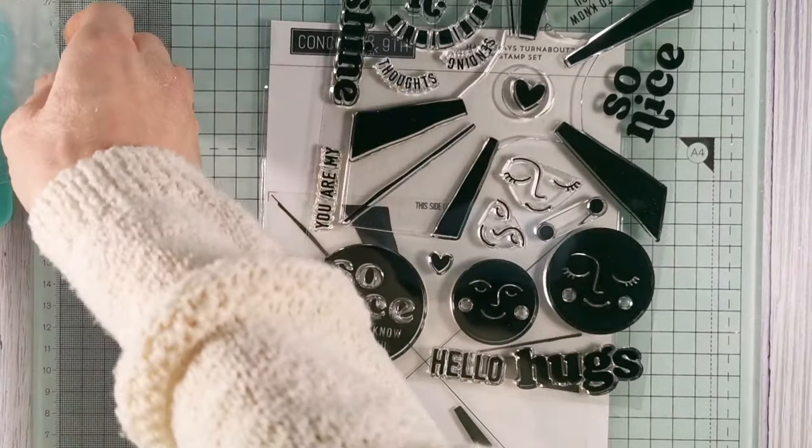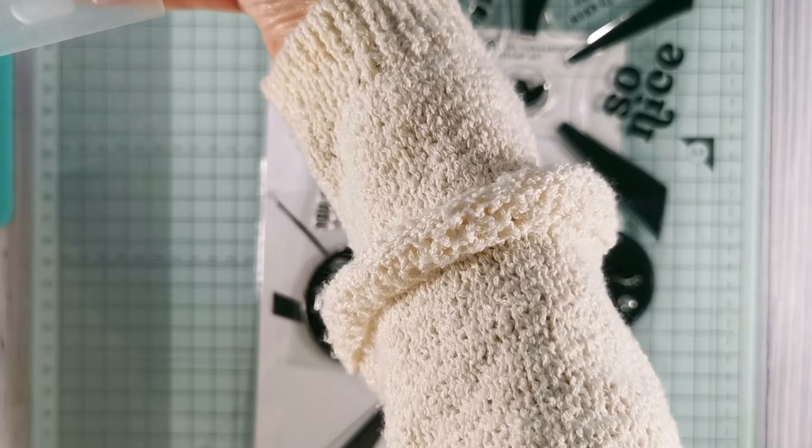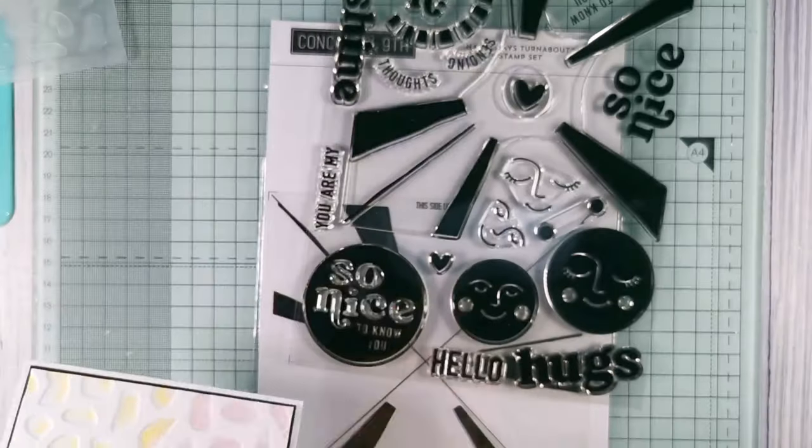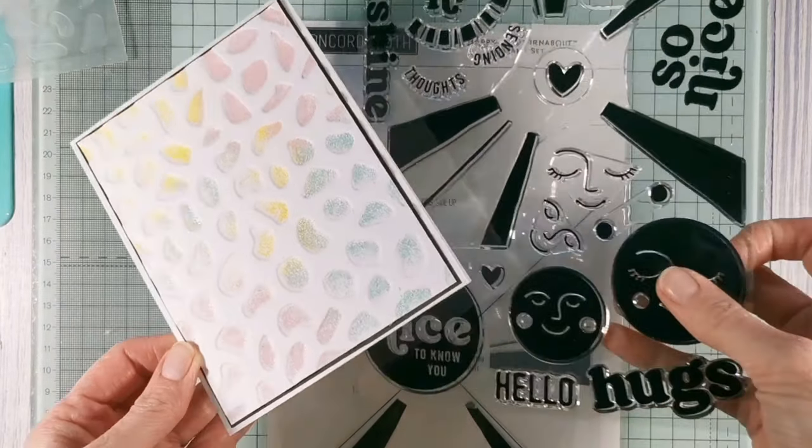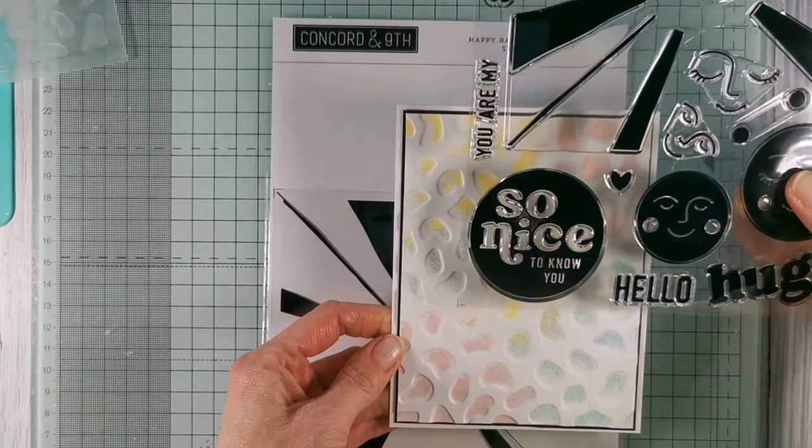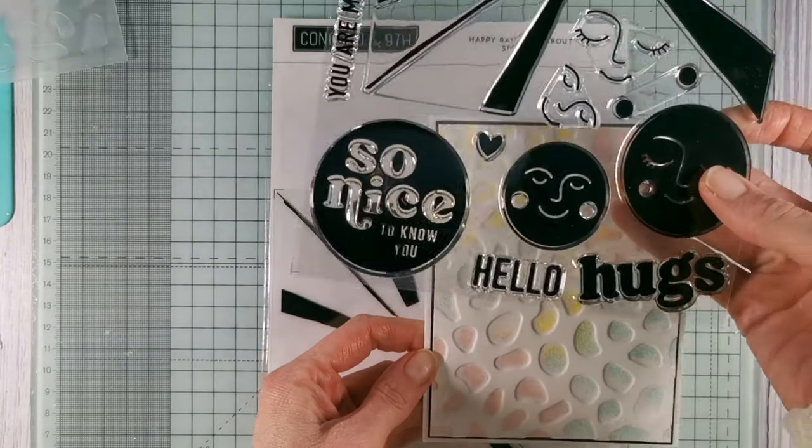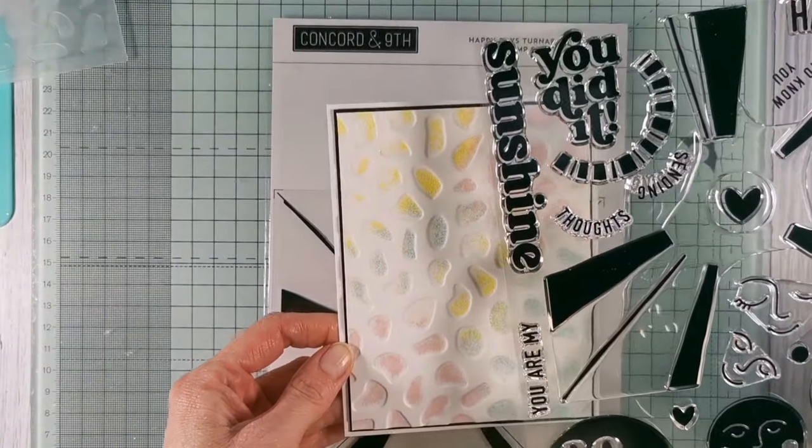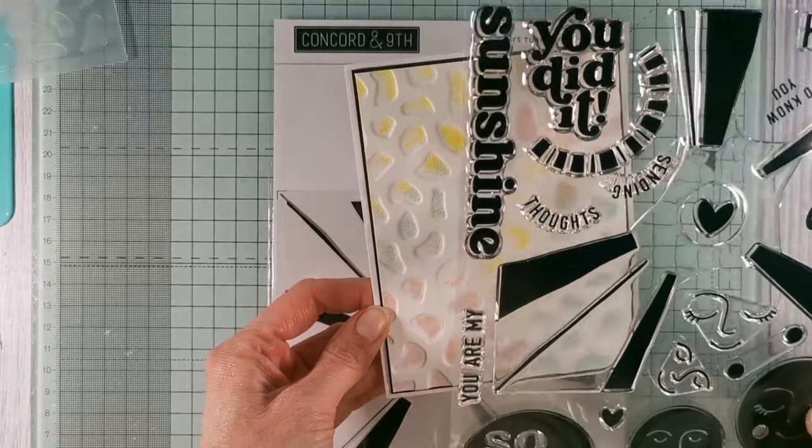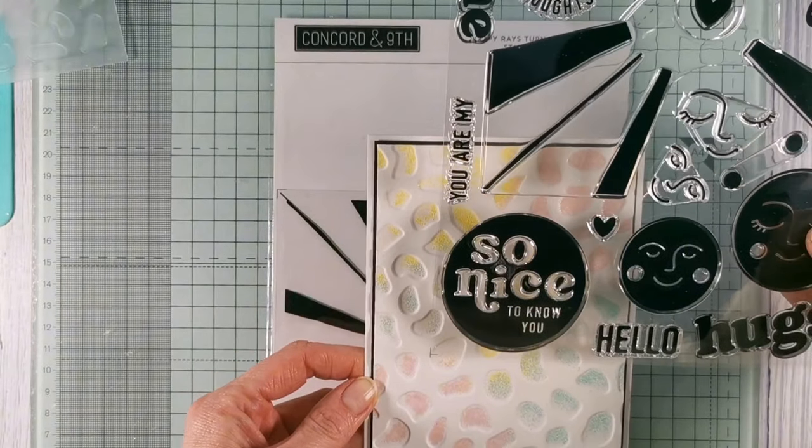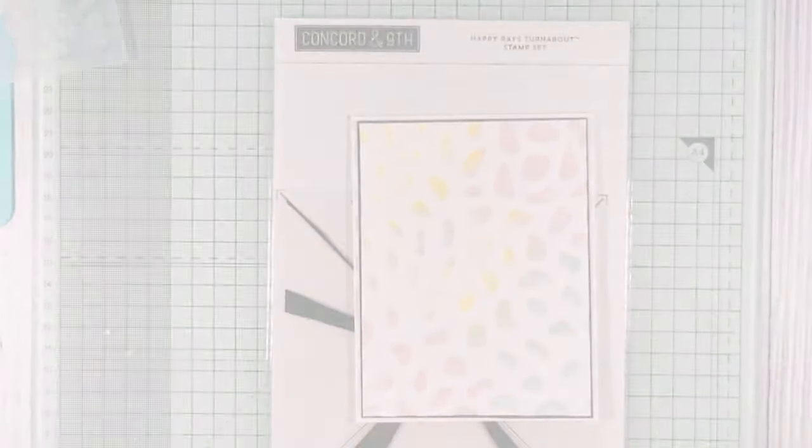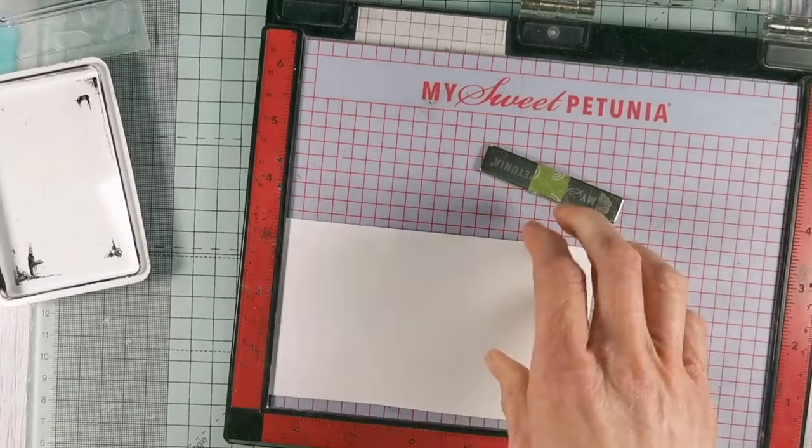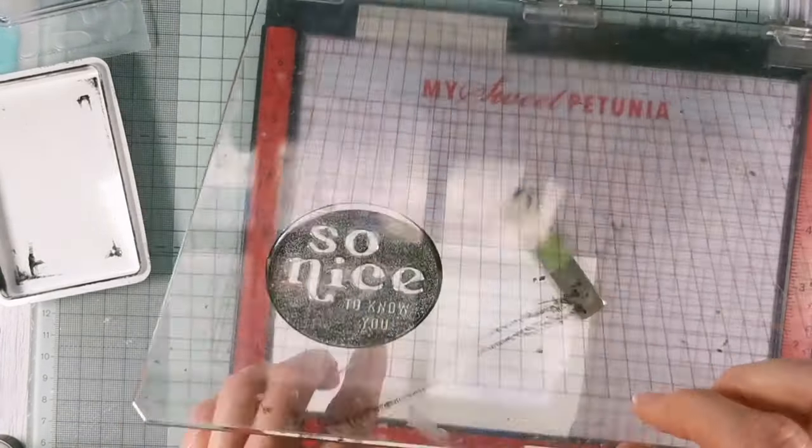So I wanted something that went with the kind of graphic bold vibe of the card, and this set from Concord and 9th was what sprung to mind. It's actually one of their turnabout sets called the Happy Rays Turnabout stamp set. So I'm just having a look to see which sentiment I think will fit best here, and I've decided to go for the circular one that says so nice to know you.